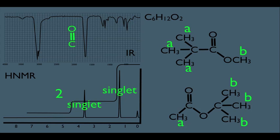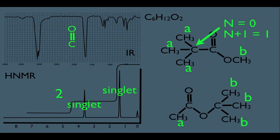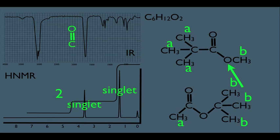Let's move to another aspect of NMR — multiplicity. Notice the signals in our HNMR are both singlets. For the top molecule, the A-type hydrogens are connected to a methyl carbon whose neighboring carbon has no hydrogens, so n equals zero, and zero plus one gives a singlet. For the B-type hydrogen, its only neighbor is an oxygen with no hydrogens, so n equals zero, also giving a singlet. So the top molecule stays.